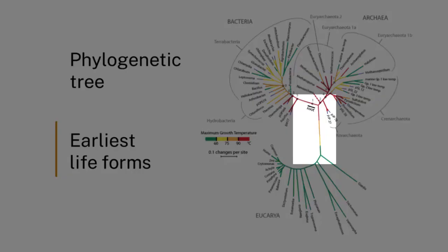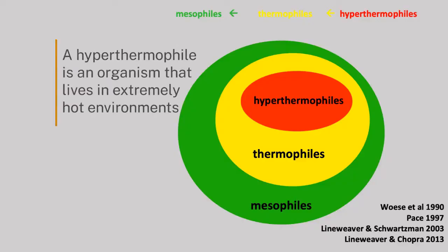The root of the tree of life is hyperthermophilic. So basically you have hyperthermophiles at the base, then thermophiles, then mesophiles like us. We are eukaryotes and we don't like showers hotter than about 55 or 60 degrees, but the root of the tree of life looks like they loved 90 or 100 degrees.